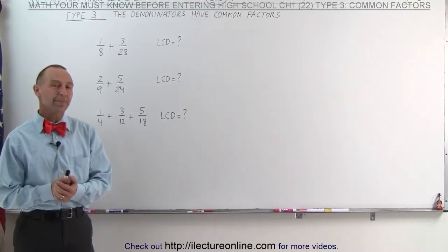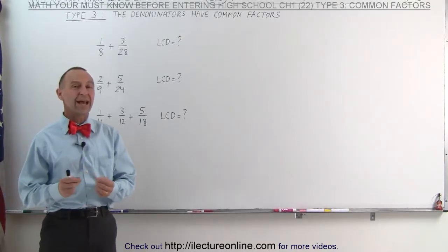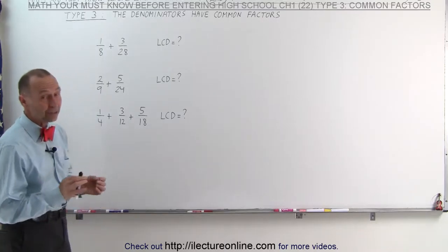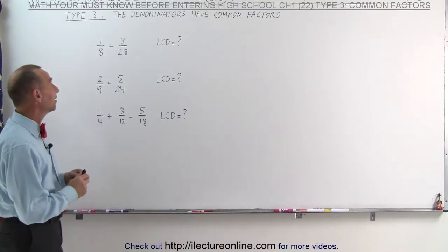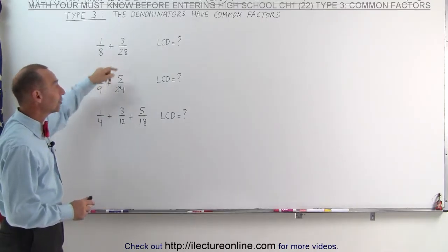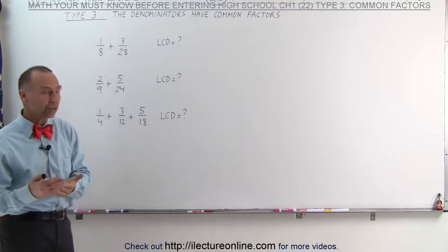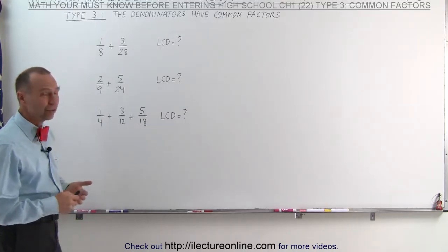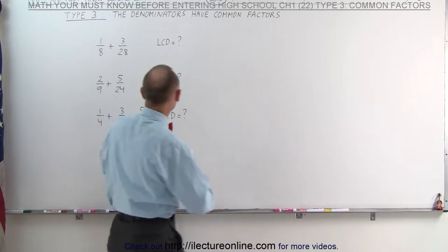Welcome to Electronaline. Here are some denominators that have common factors. The technique to find the lowest common denominator is simply to take each of the denominators and write them as a product of their factors. Let's use that technique that we've learned before to do that.